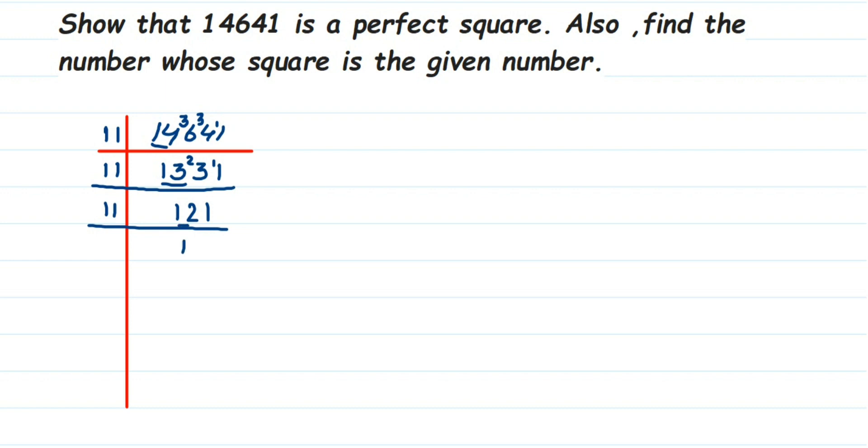11 once is 11. So again, 11 is a prime number. 11 once is 11. Now let's rewrite what we got. So 14,641 is equal to 11 × 11 × 11 × 11. Now, if the given number is a perfect square or not, how to check it?